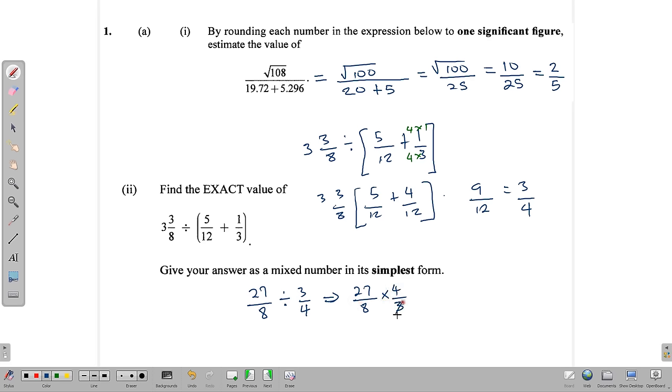27 over 8 times 4 over 3. We can do some division here. 3 divides that 9 times. 4 divides that 2 times. And so we end up with 9 times 1. That's 9 over 2. And since we want our answer as a mixed number in the simplest form, we have to divide it out and write 4 remainder 1.